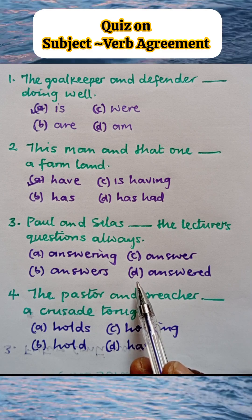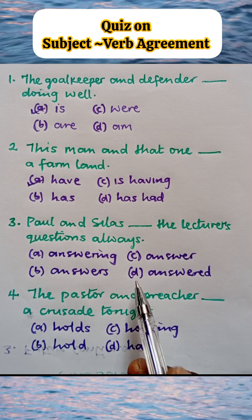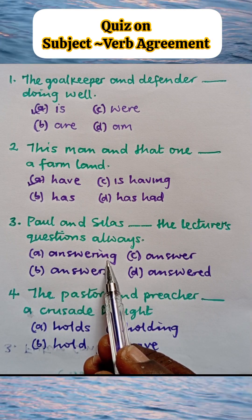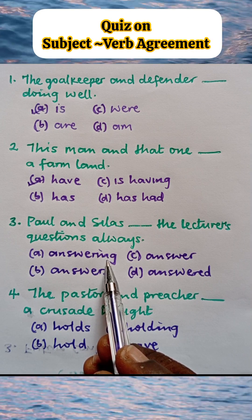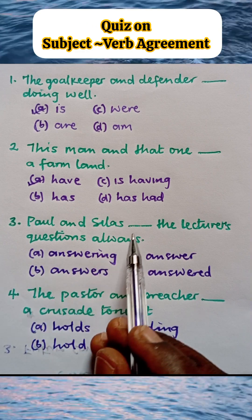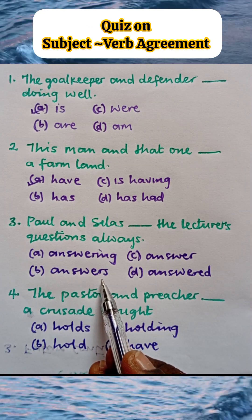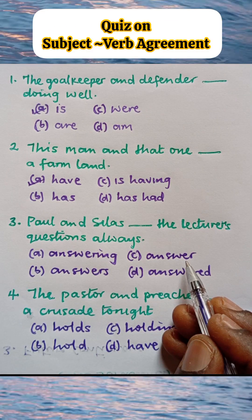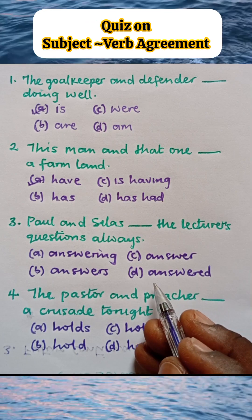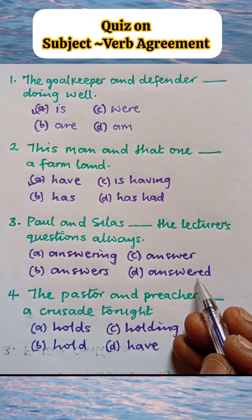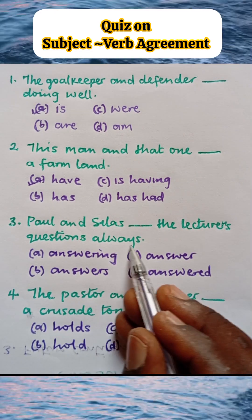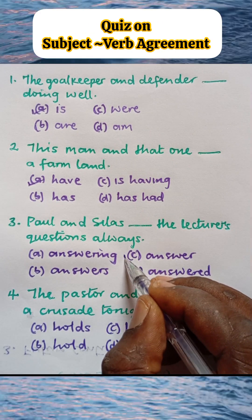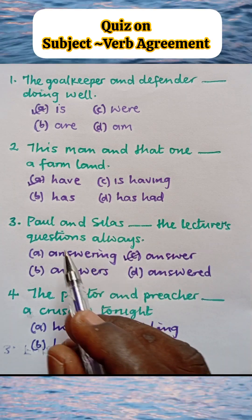We need a plural present tense verb here. 'Answering' is a present participle and needs an auxiliary verb — there is none, so it is wrong. 'Answers' is a singular verb — wrong. 'Answer' is a plural present tense verb — correct. 'Answered' is a past tense verb — wrong. The term 'always' shows a regular action and doesn't require a past tense verb. So the correct option is C: Paul and Silas answer the lecturer's question always.